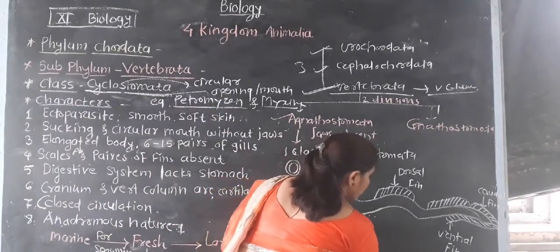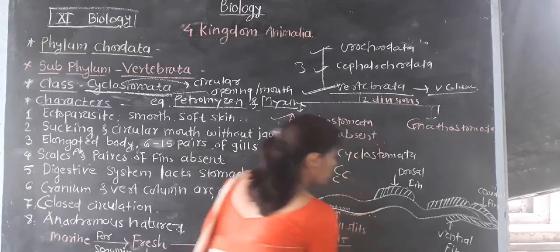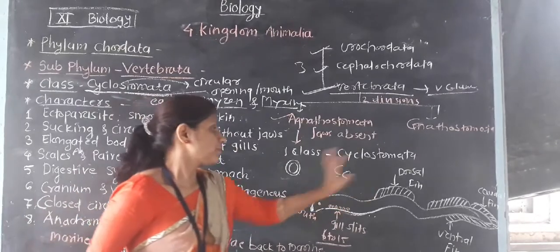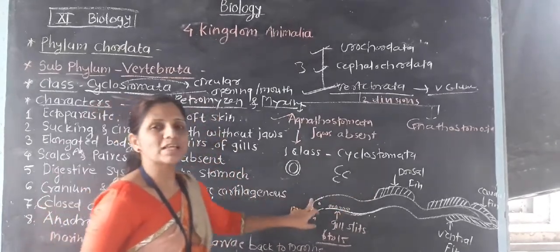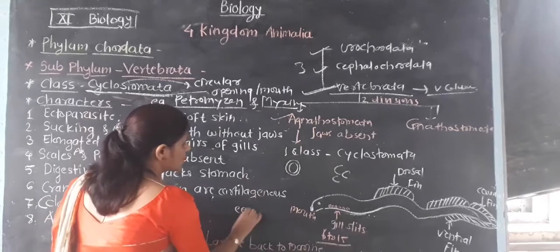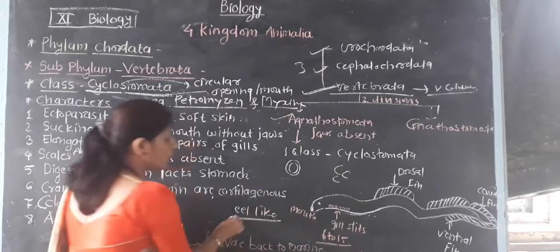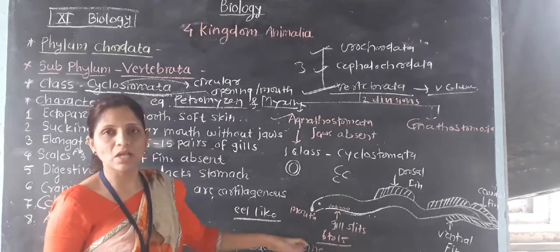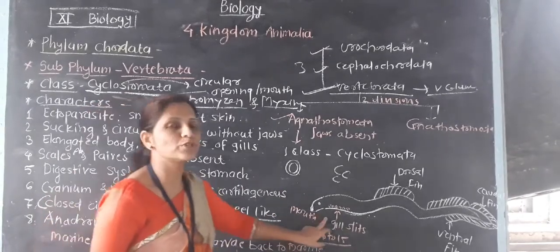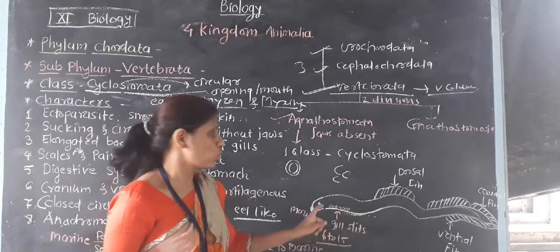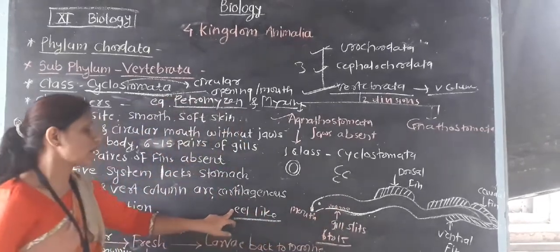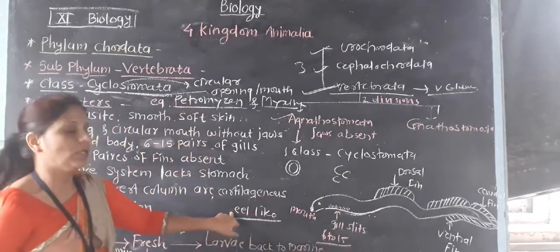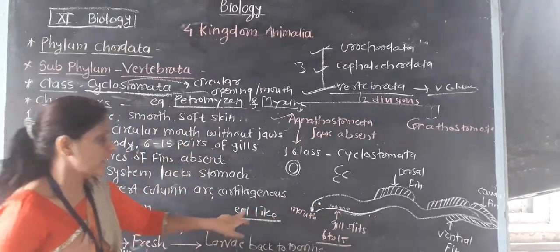For example, Petromyzon. If you see the diagram, this looks like a fish — it has a fish-like appearance. But this is not included in fish. Its appearance is fish-like, but these animals are eel-like. The body is elongated and looks like an eel.